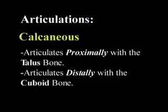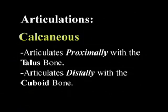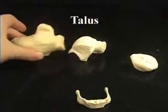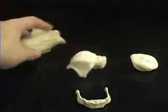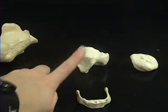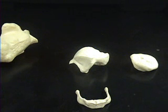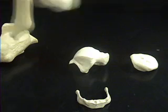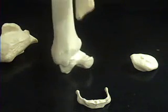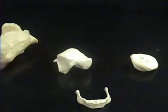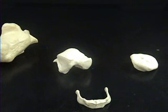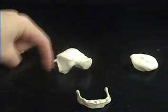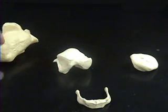Continuing on, we have our talus bone. The talus sits on top of your calcaneal bone, and your talus articulates proximally with your tibia and your fibula. What articulates with this bone proximally is your fibula and your tibia. What articulates with it inferiorly? You have your calcaneal bone.